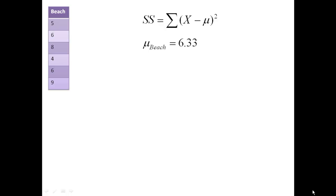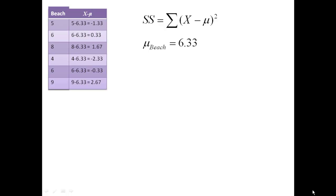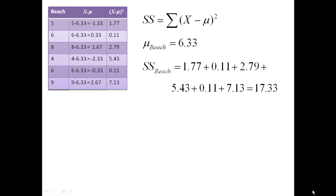We know that the mean of the sample is 6.33. Let's look at what the sum of squares calculation looks like. We need to do x minus the mean for each score, so for each value of x. You take each score and subtract away the mean. Then, if you follow the formula, you need to square those values. So 1.33 squared is 1.77, 0.33 squared is 0.11. Now we have all of the squares, and we need to sum them, which is why it's called the sum of squares. The sum of squares for Beach is 17.33.